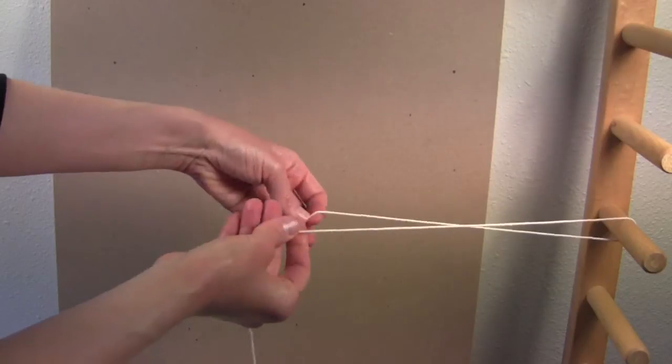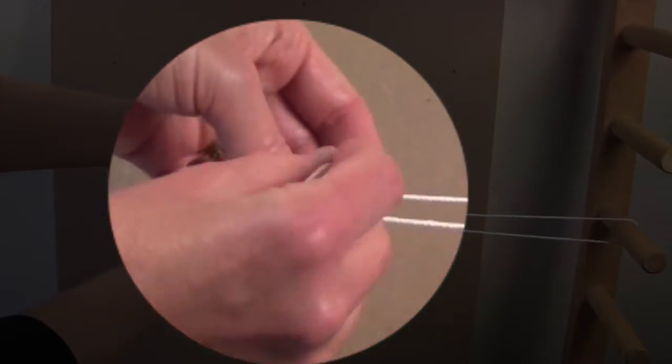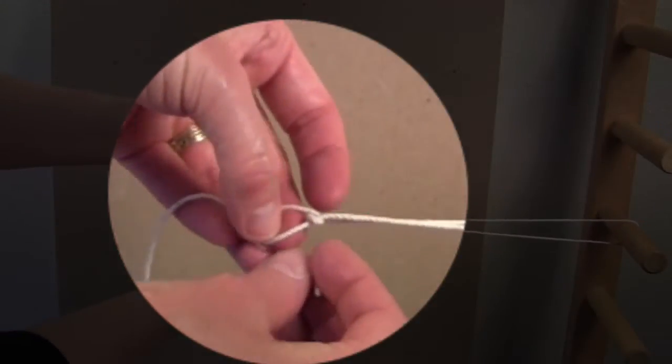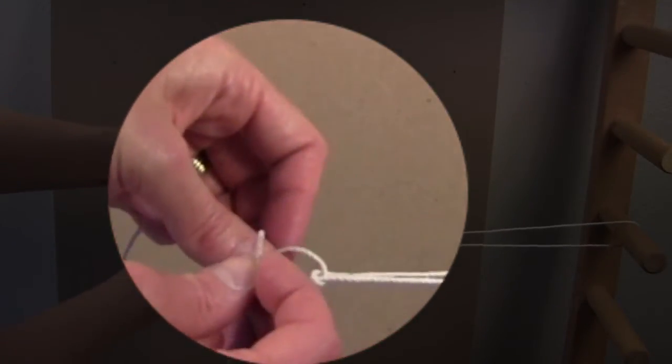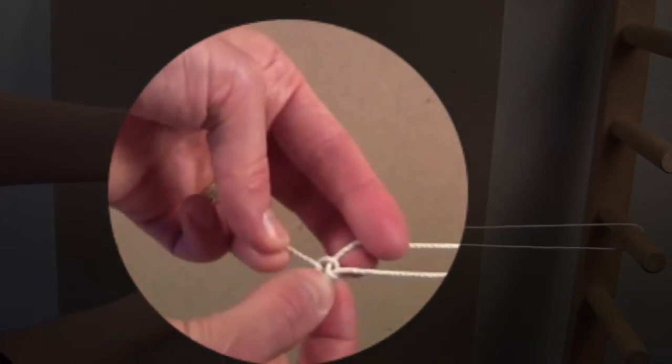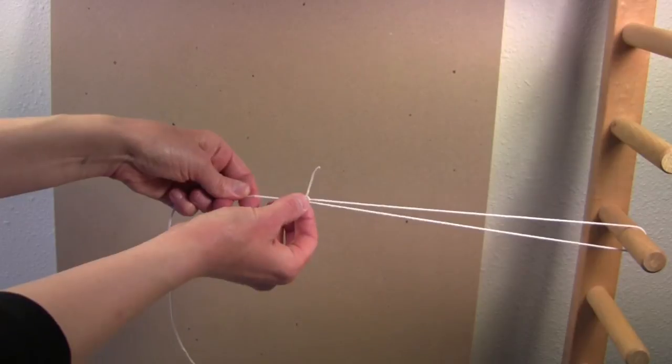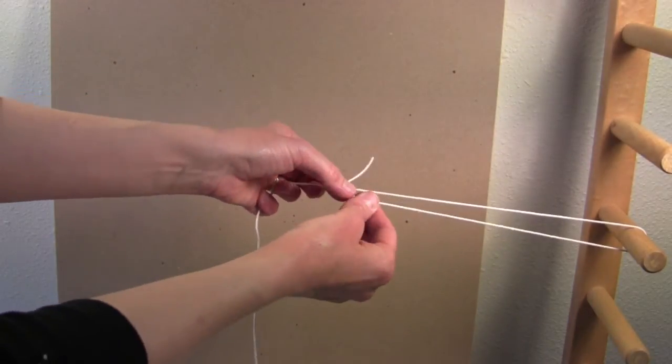So something like this. This would come around and over, and around and over again. So I've got two half hitches. Tighten those up, and you'll have a nice knot that will slide looser or tighter.